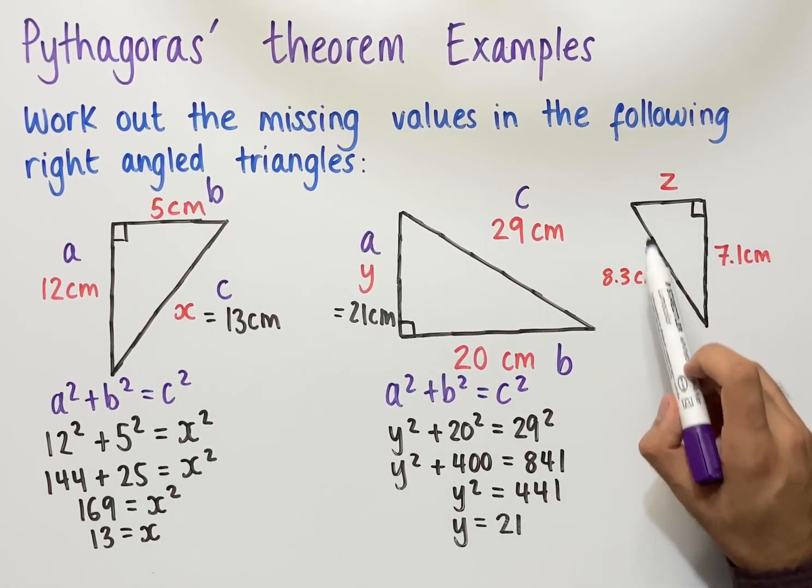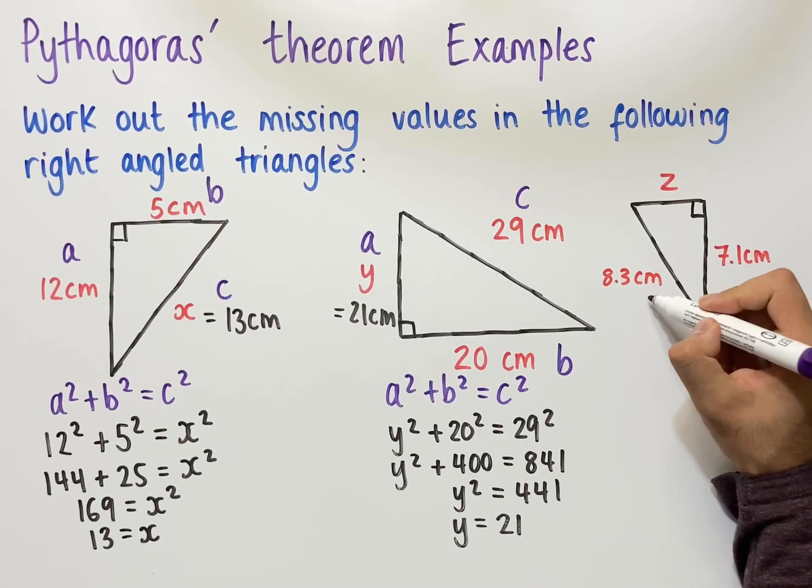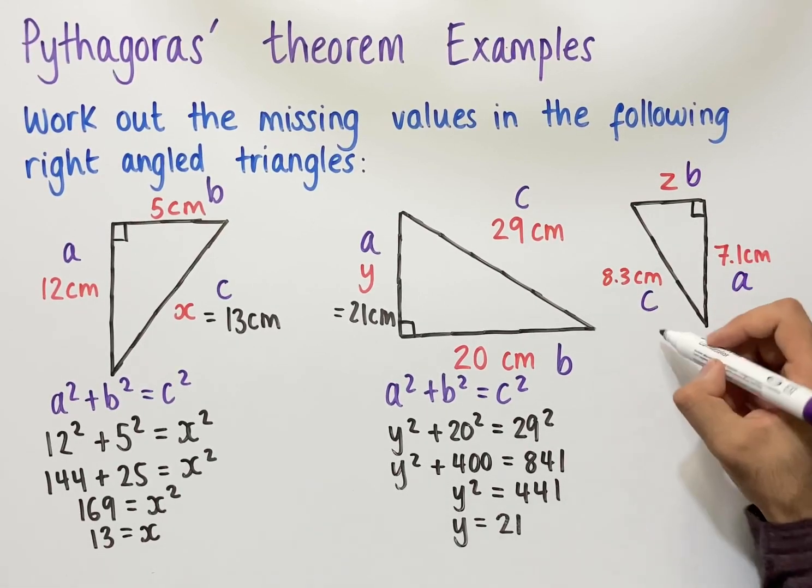Finally, in this last triangle, we have that the side opposite the right angle is 8.3 centimetres, and so that's the hypotenuse c, and the other sides we can label however we like. So we'll label this as b, and we'll label this as a.